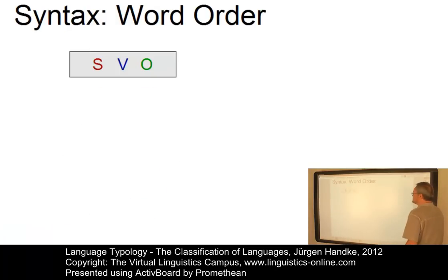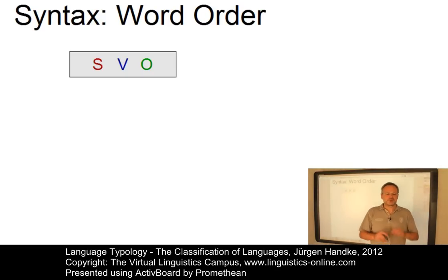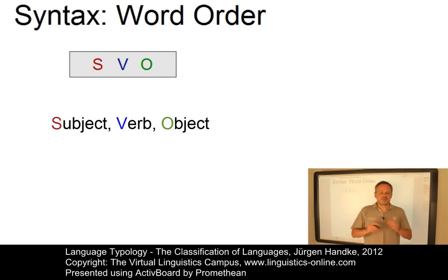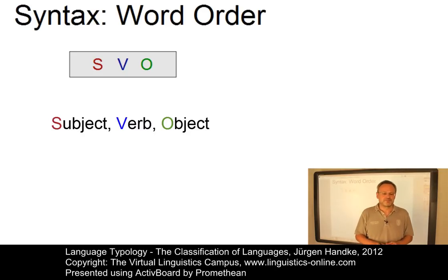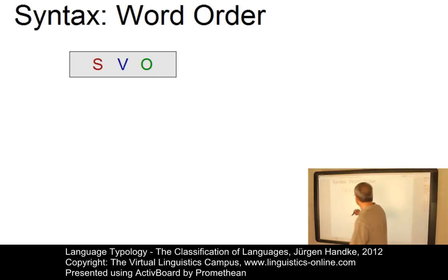Let us now look at the second parameter: the syntactic parameter of word order. The order of the functional constituents of clause structure — that is, subject, verb and object — has been made into the second, or maybe even the first and most important, typological parameter along which languages can be classified. This provides us with six theoretically possible word order types.